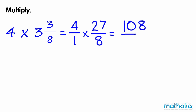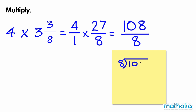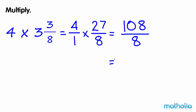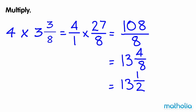That is equal to one hundred and eight-eighths. This can be expressed as the mixed number thirteen and four-eighths. Four-eighths is equal to a half, so four times three and three-eighths is equal to thirteen and a half.